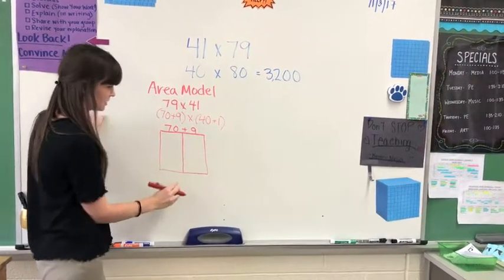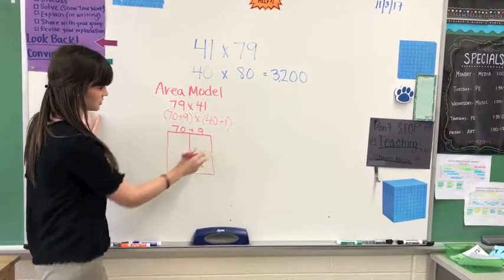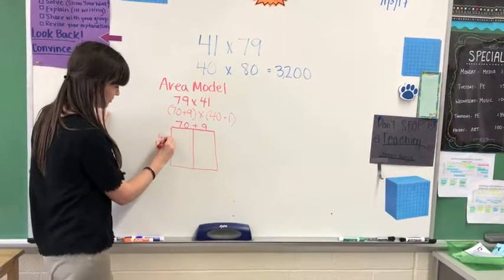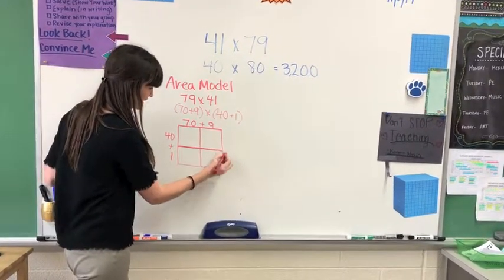I break up my box in two pieces because it's a two-digit number. 41 is also a two-digit number, so down the side I'm going to put 40 plus 1. It's a two-digit number, so I break that up as well.